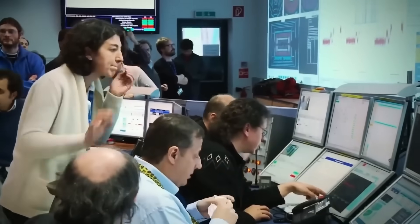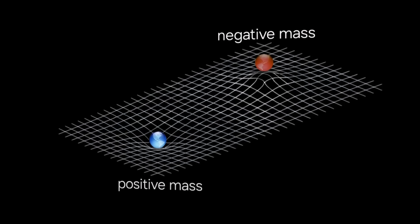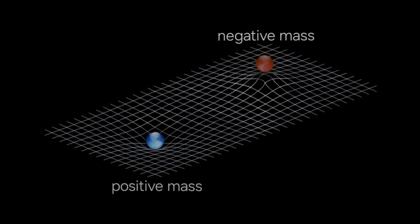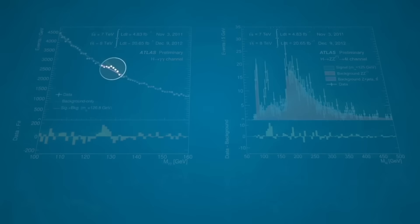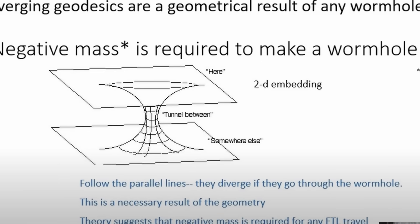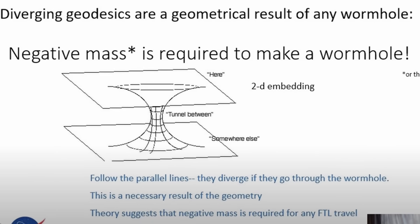Scientists have created systems with negative effective mass behavior, like that 2017 ultra-cold gas experiment. Imagine driving a car forward but watching the wheels spin backward. The gas flowed toward the push instead of away from it.